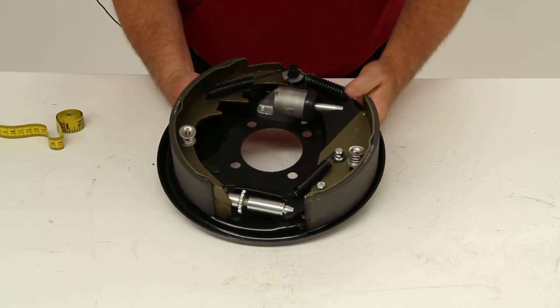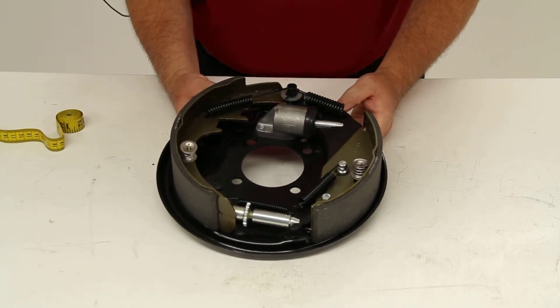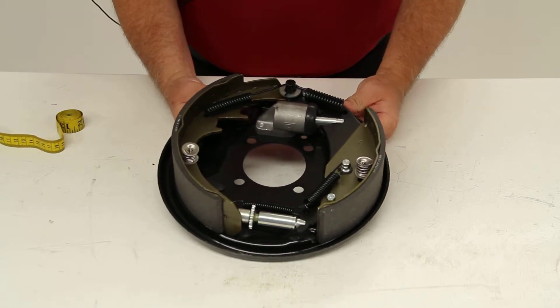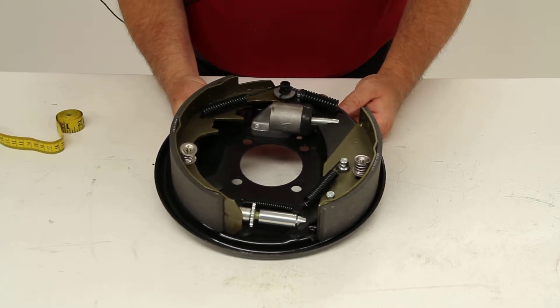This brake assembly, when paired with a left-hand side brake assembly, will have a weight capacity up to 3,750 pounds.